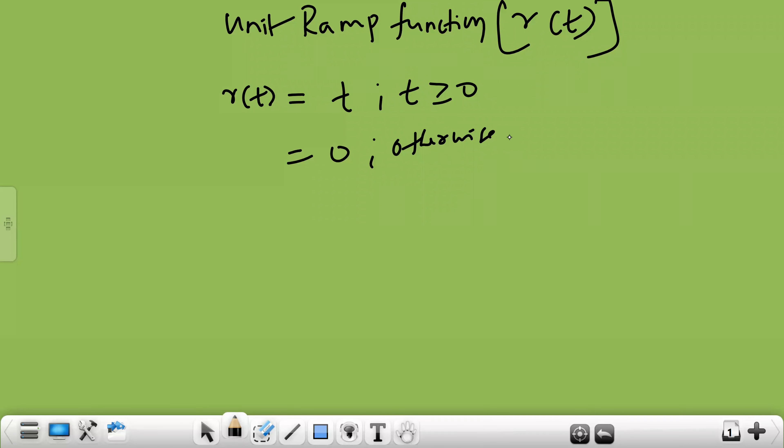Again, it is existing only at positive side. R of t equal to t means at the 0 you are having slope, at the 1 you are having 1, at the 2 you are having 2 like that.